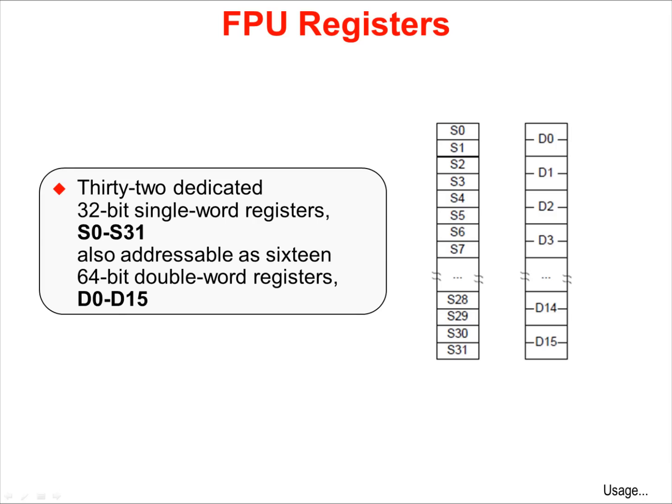The floating point unit has 16 64-bit double-wide registers D0 through D15, and 32 32-bit single-word registers S0 through S31.